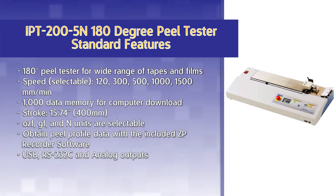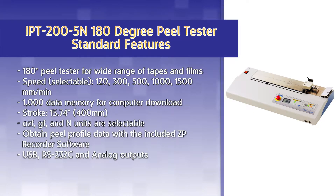The IPT has a 1000 data internal memory which can also be downloaded to a computer. The tester features a large working area with a stroke of 15.74 inches or 400 mm. Ounces force, grams force, and newtons are the three units selectable on the unit. Obtain peel profile data with the included ZP Recorder software.